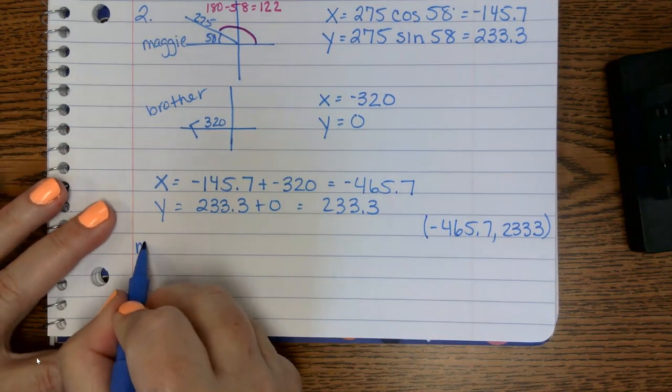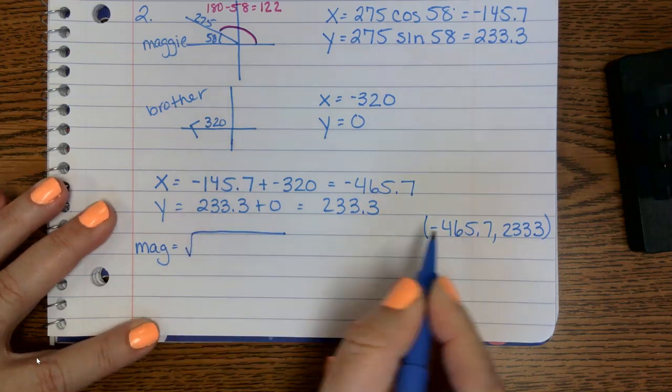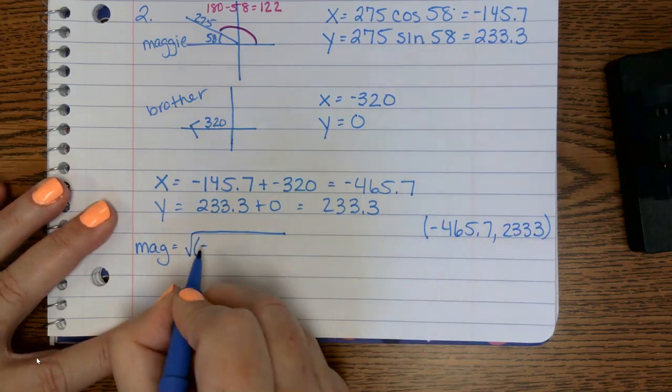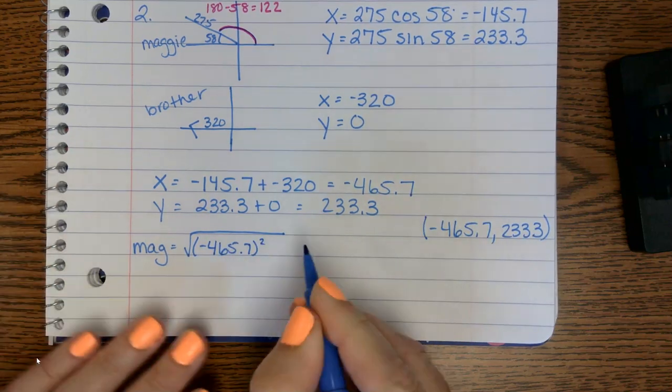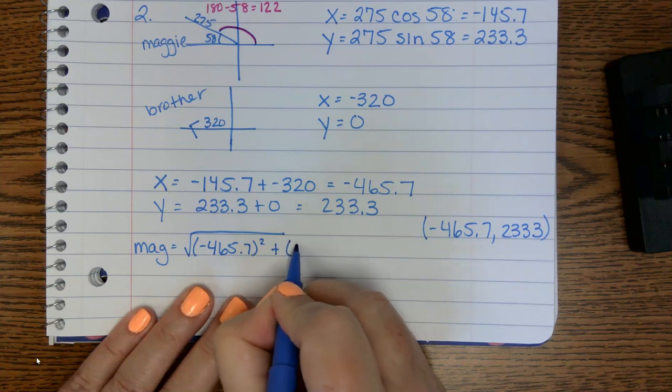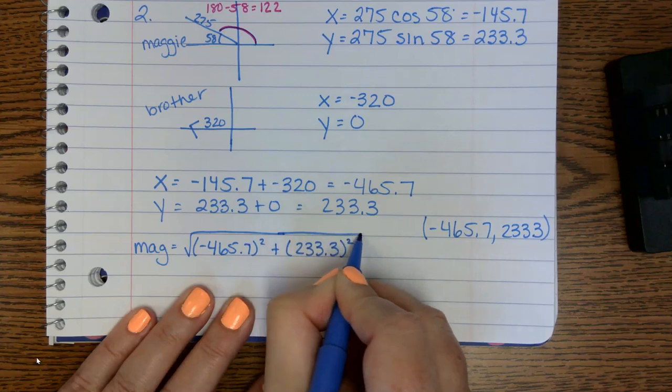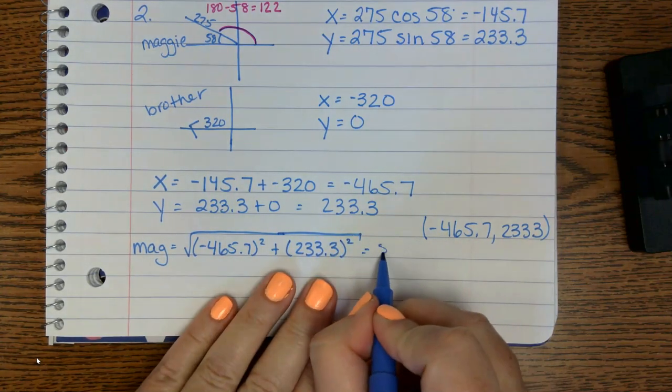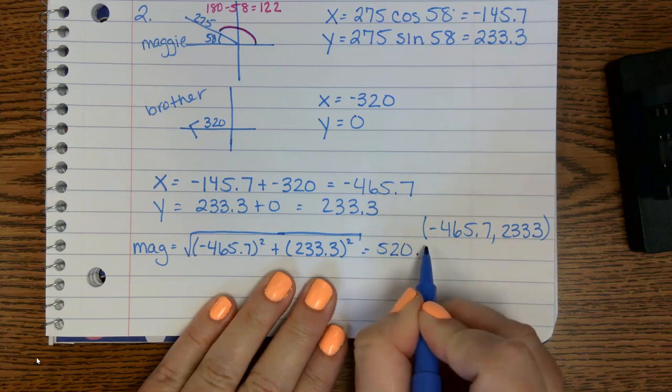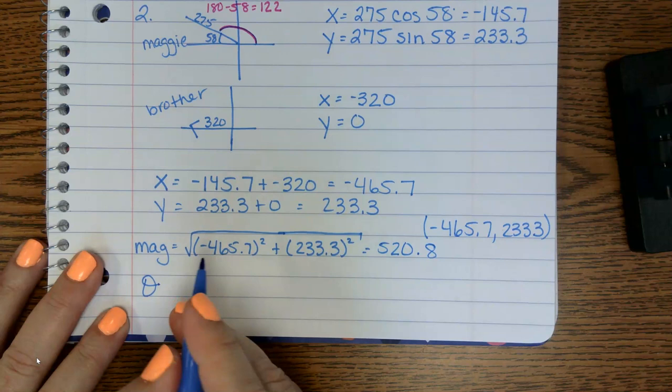We've got to find our magnitude. Please, because we definitely have those negatives, we must put parentheses around. Because if not, you're going to get a big old error message. And I don't know about you, but those ruin my day. So if I put this in, my magnitude comes out as 520.8.